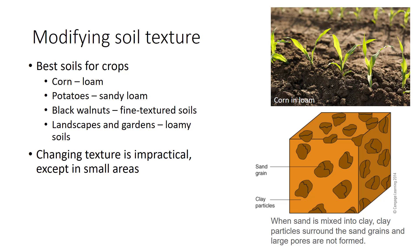Can a grower change soil texture to improve it for the crop being grown? Except in very small areas such as golf greens or potting soils, changing texture is impractical—the amounts of clay or sand to be added are too large. Clay particles surround the sand grains and fill in any pores that may be created, so the soil continues to behave much like clay. To greatly modify clay, enough sand must be added to make the sand grains touch each other and form bridges that exclude clay from the pores between them. A better way to improve clay soils is to add organic matter.